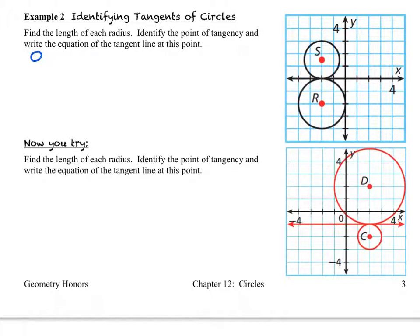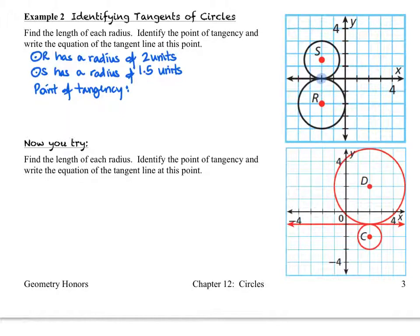So we're going to start out using proper notation, of course, and we're going to say the circle with center R has a radius of two units. We can see this on our graph, one, two. Okay, now we're going to do the circle with center S, and that has a radius of one and one-half units. Next, we want to identify the point of tangency, and the point of tangency is where the two circles connect. We can see that this point is where they intersect with one another. So the point of tangency has coordinates negative two, comma, zero.